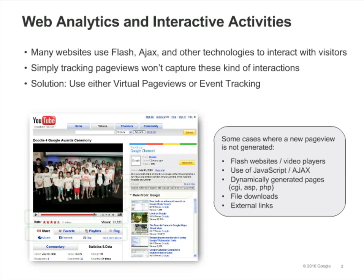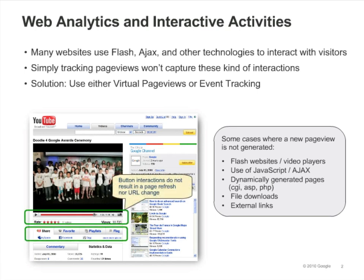This is because when a visitor interacts with a video player, for example, no page view is generated. Some other examples of interactions that don't generate page views are Ajax-based activities, file downloads, and clicks on links that take the visitor to another site. So, how do you track these kinds of activities?